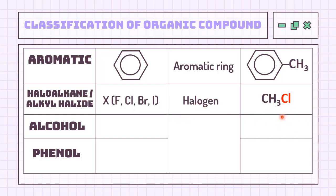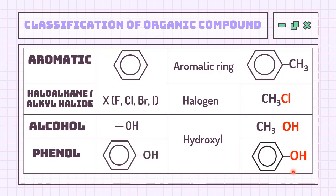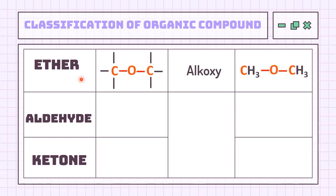Then we have the hydroxyl group, where an OH group is attached to the hydrocarbon. If it involves an open-chain structure, then the compound is known as alcohol. If it is attached to an aromatic ring, then the compound is called phenol. As for ether, the functional group can be identified in a molecule when there is oxygen in between two carbons — in other words, C-O-C. They are called alkoxy, a combination of alkyl, which represents the carbon chain, and hydroxyl, which characterizes this oxygen.